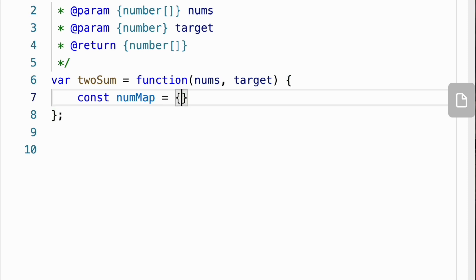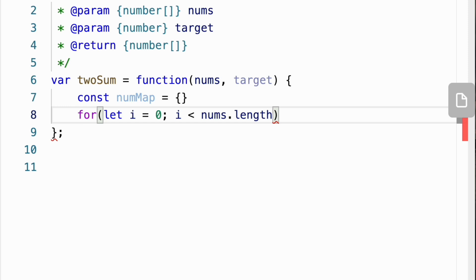We start by initializing an empty hashmap. We can call it a num map, for example, which is an empty object at the beginning. We iterate through the array. In this solution we can iterate through the array only once, unlike the nested loops in the brute force approach.